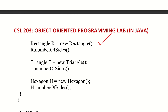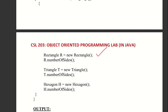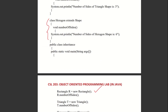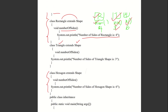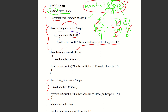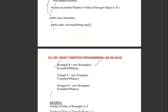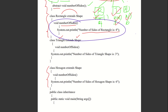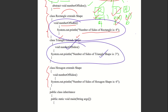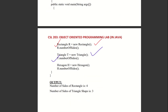Rectangle r = new Rectangle(). Then r.numberOfSides() — we access the number of sides through the rectangle object. Similarly, triangle t = new Triangle(). T.numberOfSides() invokes the triangle's number of sides. Similarly, the Hexagon class object h is created and h.numberOfSides() is invoked.